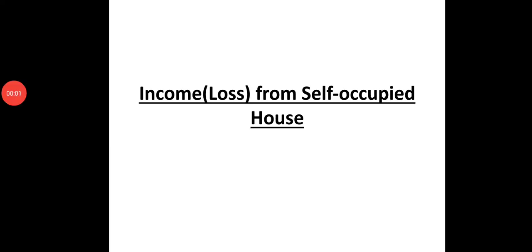Dear students, we are going to discuss the self-occupied house in the valuation. We know that income from house property is divided into two: income from let-out house property and income from self-occupied house property. Let-out house property we are already discussing, so now we move on to self-occupied house.